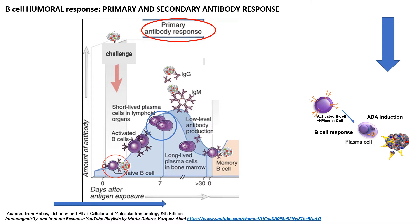There is an exception to this timeline: the very fast response that occurs with allergic or anaphylactic reactions, which can occur within minutes and is characterized by IgE, is covered in a different tutorial on YouTube. Besides the anaphylactic responses, the other B-cell response takes about a week or so to have the titers detectable.